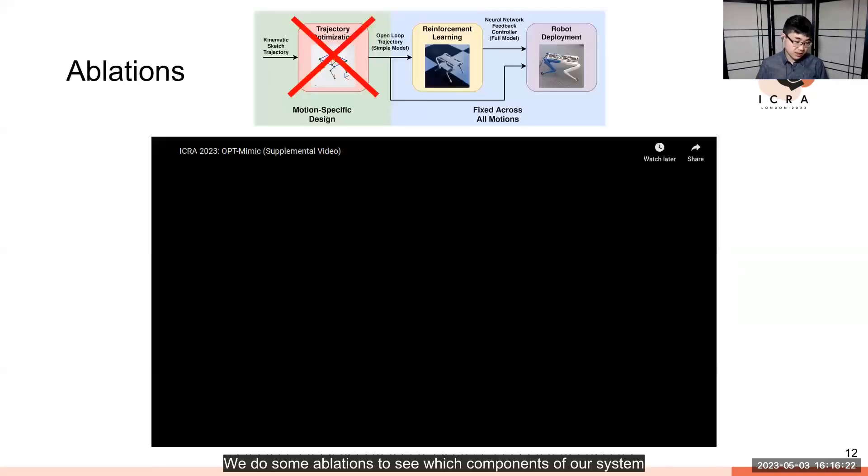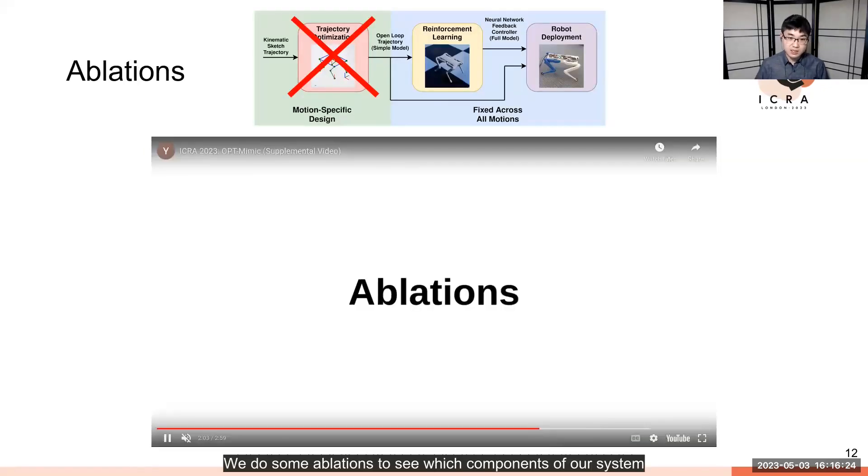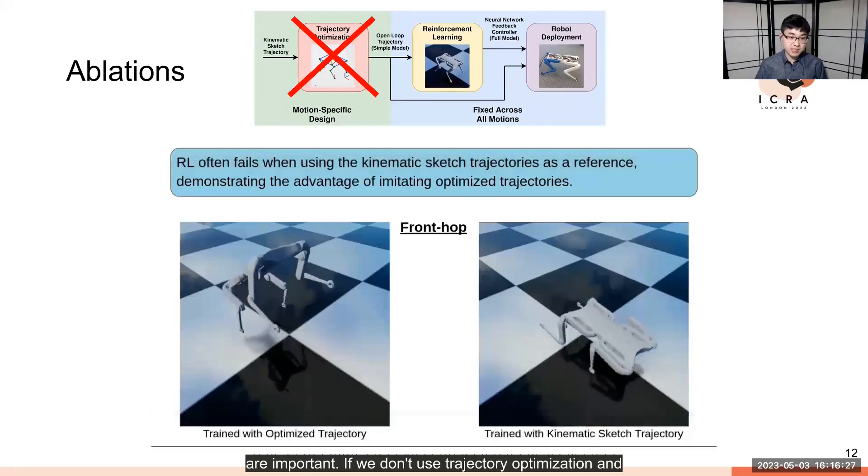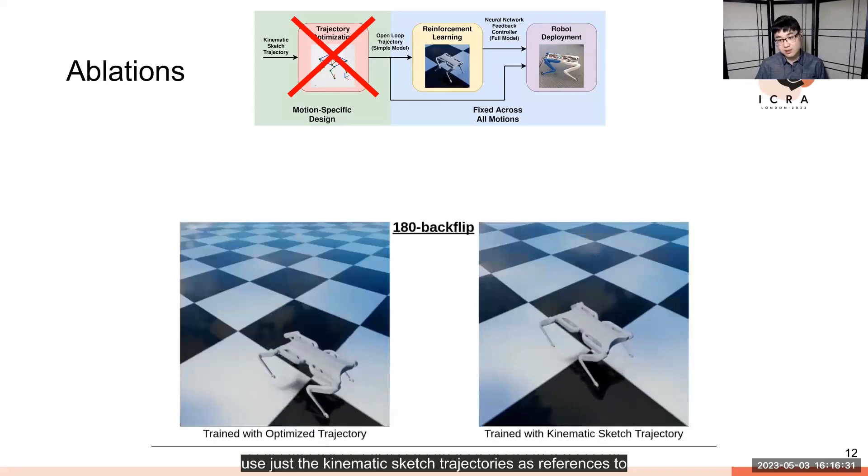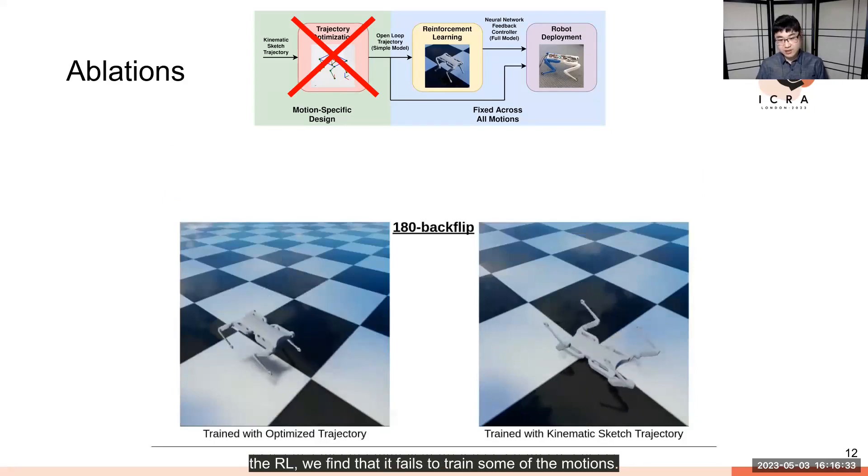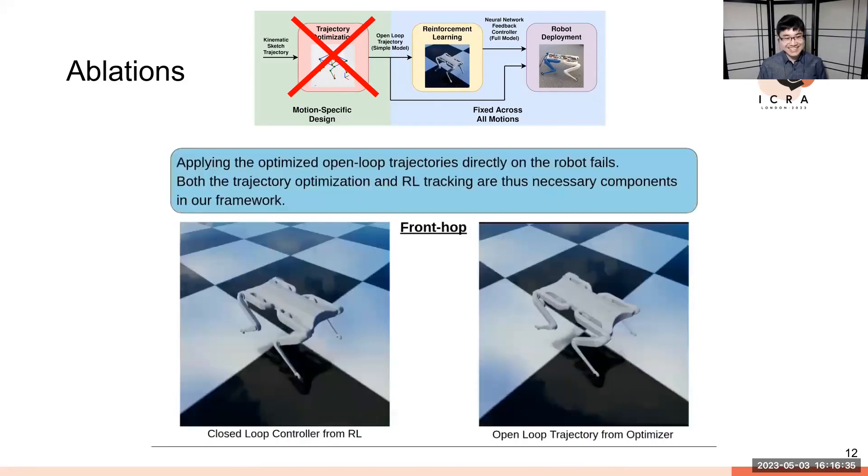We do some ablation to see which components of our system are important. If we don't use trajectory optimization and use just the kinematic sketch trajectories as references for the RL, we find that it fails to train some of the motions.